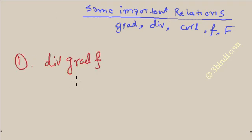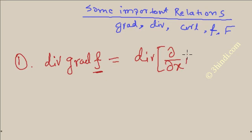The first relation is what exactly is the meaning of div grad f, where f is a scalar function of xyz. To solve this, you first require to find out the grad of f. So grad of f is del by del x i plus del by del y j plus del by del z k times f.